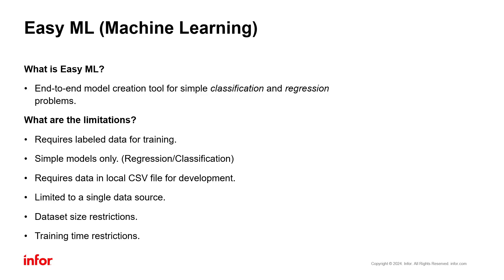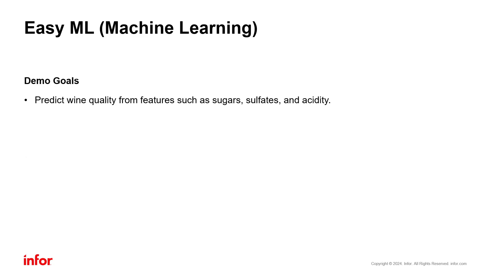Now that we've covered some of those requirements, let's take a look at EasyML in action. For this demonstration, we will be predicting the quality of wine from some of its features, such as sugar content, sulfates, and its acidity. This is a classification problem, as we are trying to identify which of five categories—low, medium-low, medium, medium-high, or high—the wine falls into.